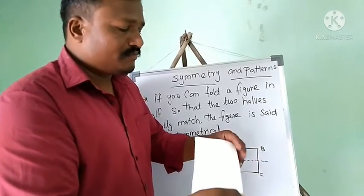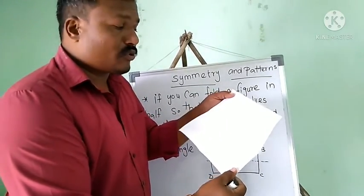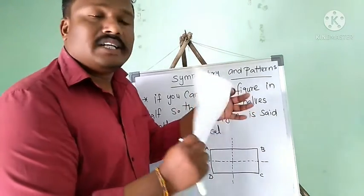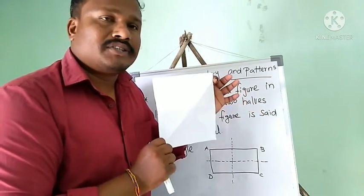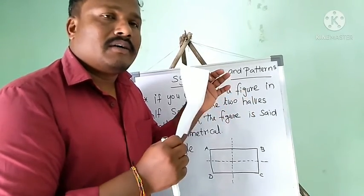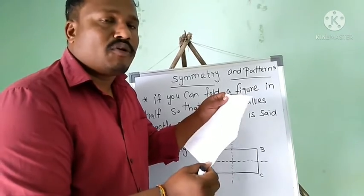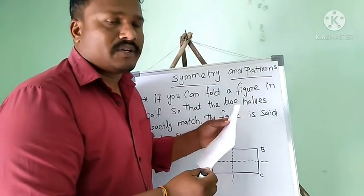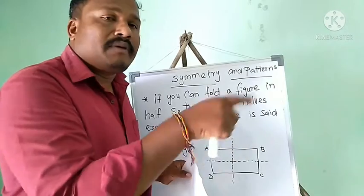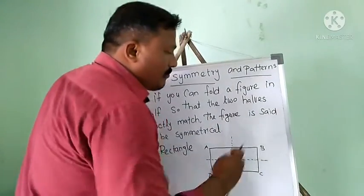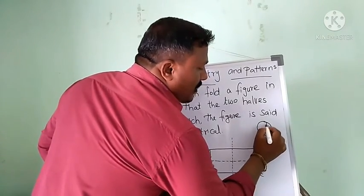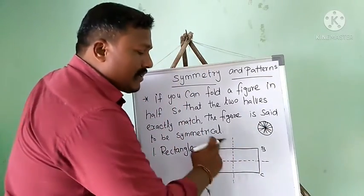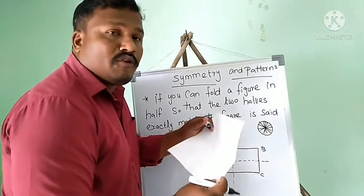So a square shape has four lines of symmetry — one, two, three, four. A rectangle has only two lines of symmetry. If you take a circle, you can fold it in many different ways, so a circle has an infinite number of lines of symmetry.